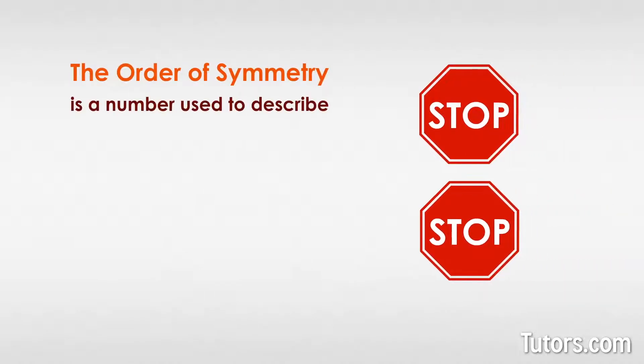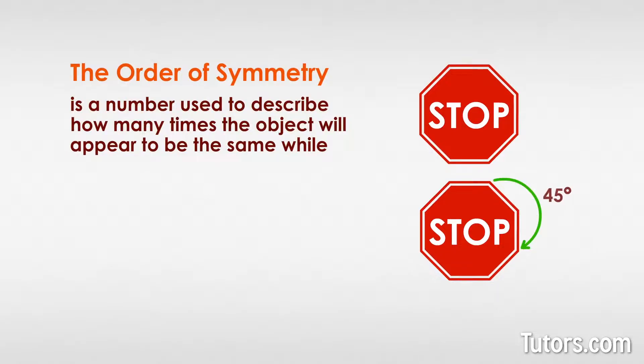Now let's discuss rotational symmetry and order. The order of symmetry is a number used to describe how many times the object will appear to be the same while rotating around 360 degrees.